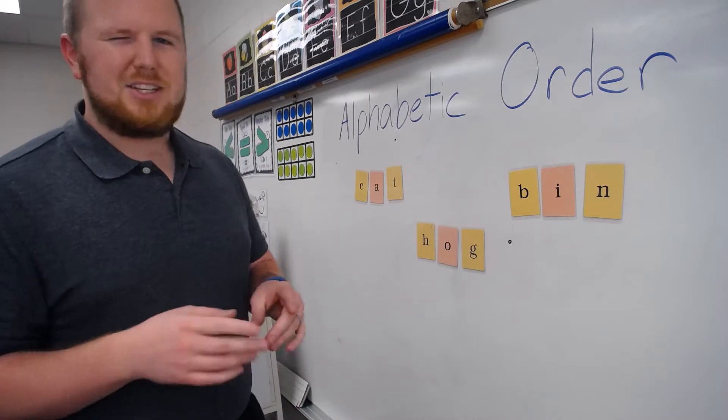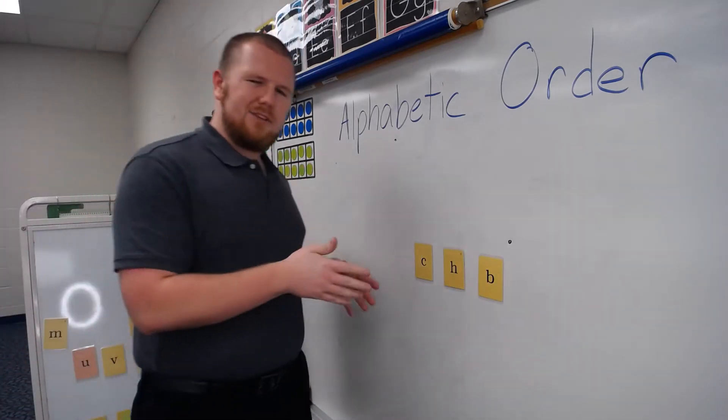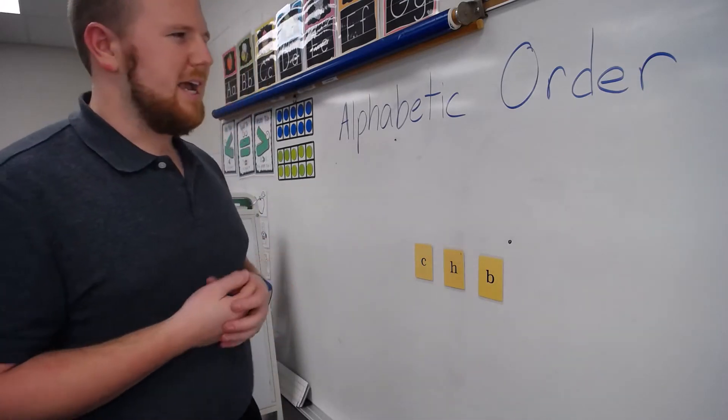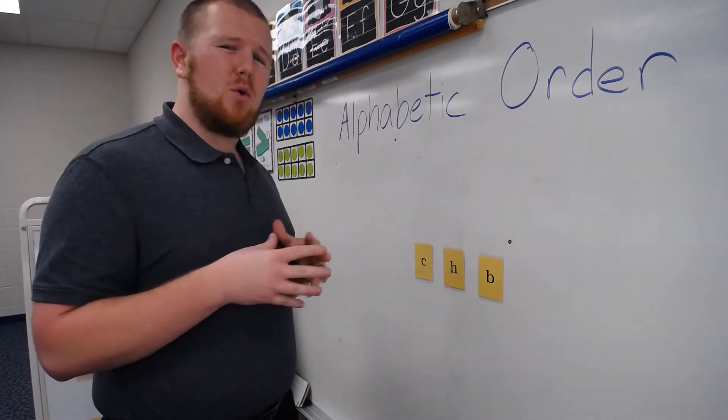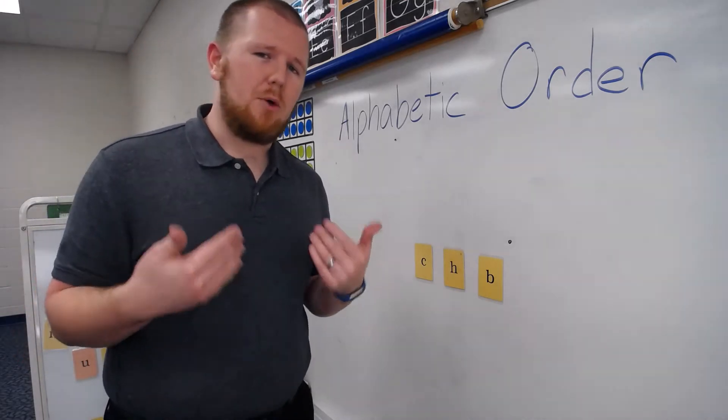So let's start small, and let's just start with the letters. Okay, good. So we have these three letters here. And if someone asks me to put them in alphabetic order, that means putting them in order from which they come in the alphabet. And we can use the alphabet to help us out with that.